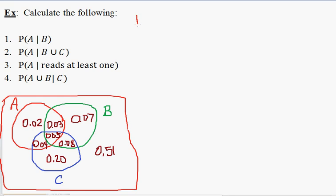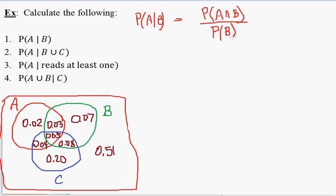Let's take a look at these problems. The probability of A given B — we can do this by division, very much like the Venn diagram problem that came before this. This is the probability of A intersect B divided by the probability of event B. The probability of A intersect B is 0.08, and the probability of event B is 0.23. So the answer is going to be 8/23. That's the probability of A given B.